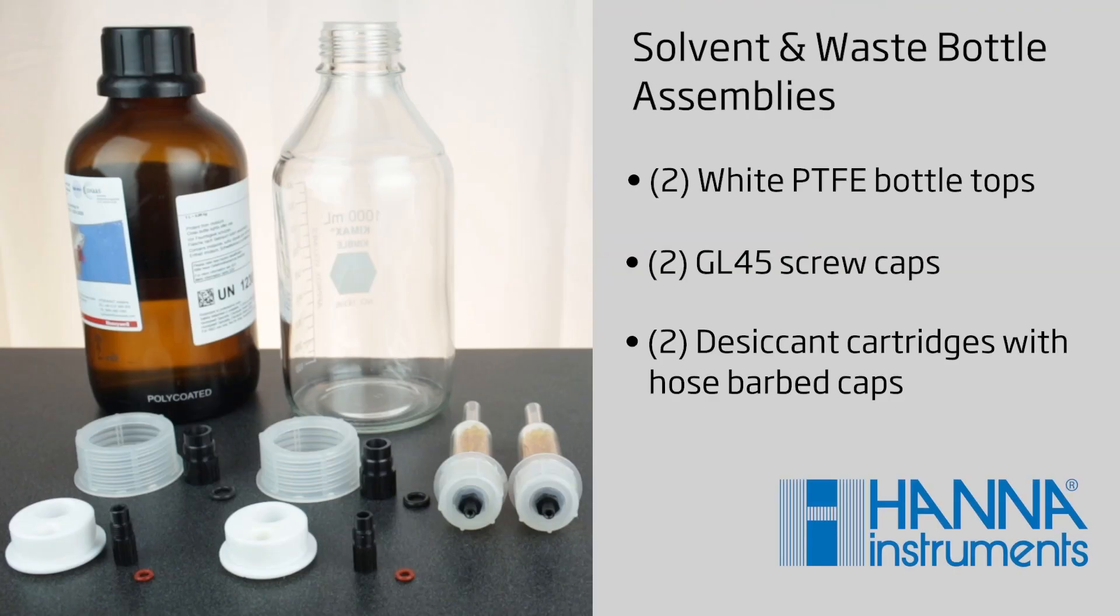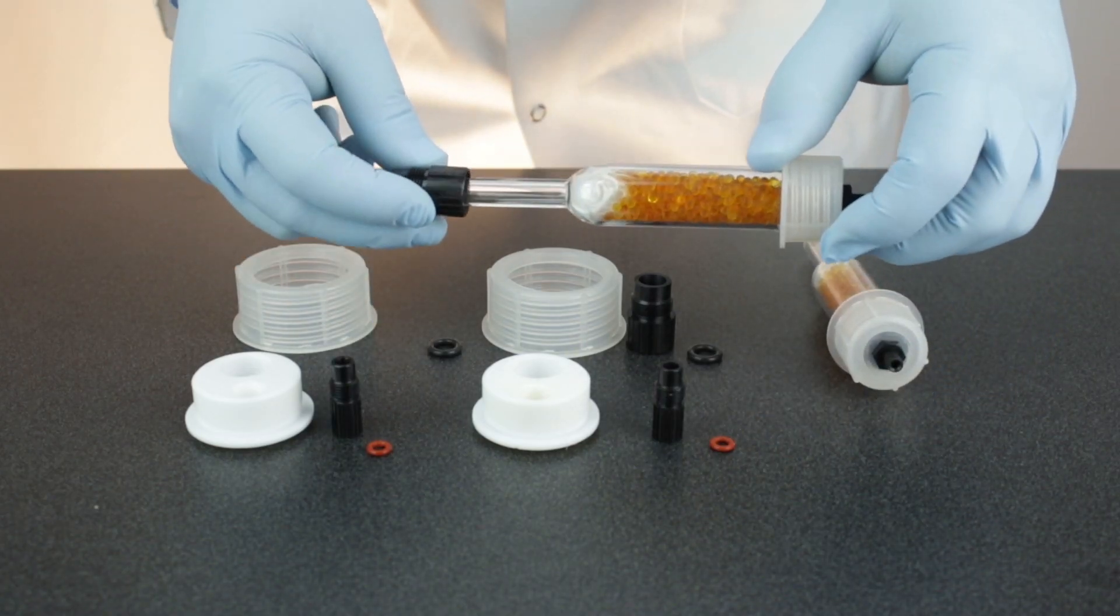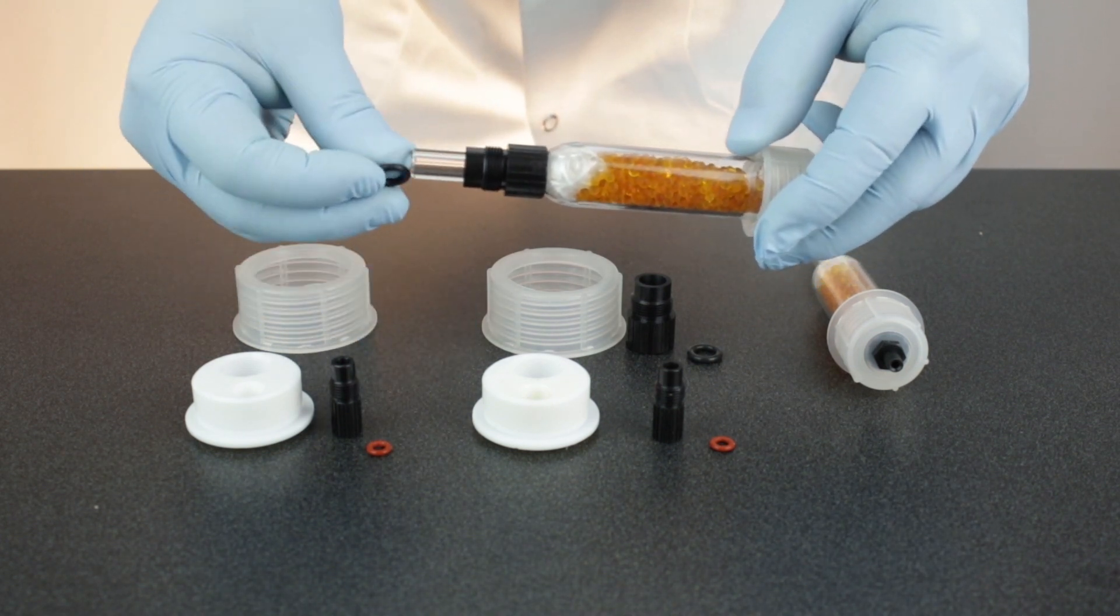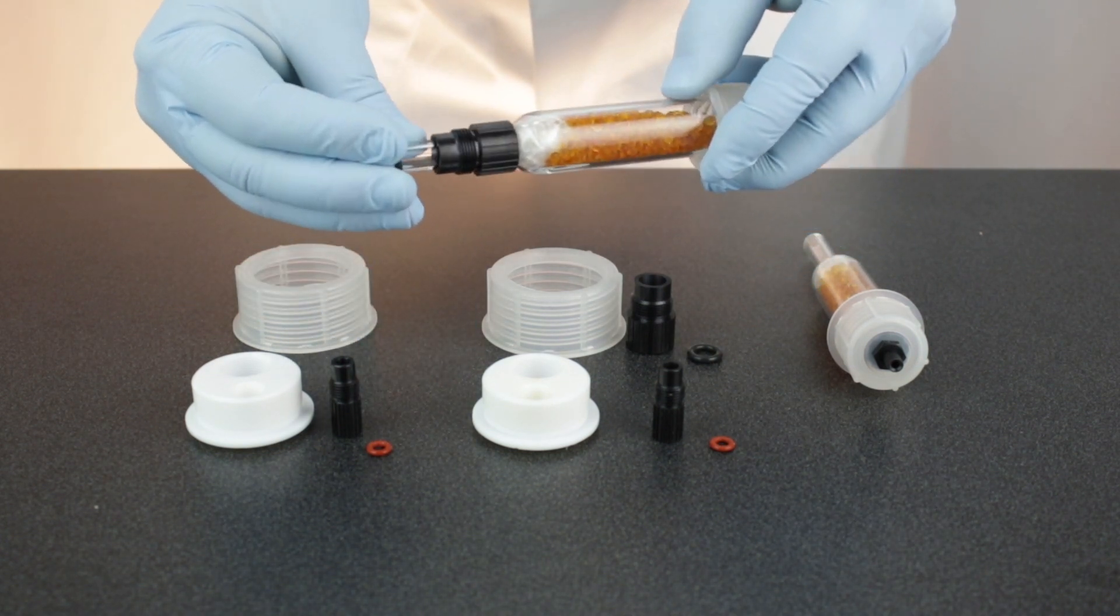For the solvent and waste bottle assemblies, we'll need white PTFE bottle tops, GL45 bottle screw caps, and desiccant cartridges with hose barbed caps. Remove the 10 mm and 5 mm fittings and red O-rings from the bottle top. Start with a desiccant cartridge. Insert it through the 10 mm fitting and black O-ring and tighten it onto the bottle top.